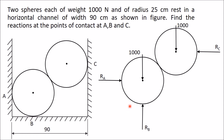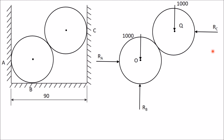In this free body diagram there are five forces: RA, RB, RC, and the two 1000 Newton weights. Since all forces are not passing through a single point, this is a case of a non-concurrent force system. For a non-concurrent force system, you have three equations of equilibrium: ΣFX = 0, ΣFY = 0, and ΣM = 0. From these three equations you can determine the three unknown quantities RA, RB, and RC.